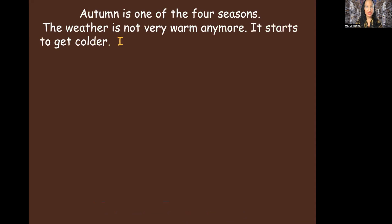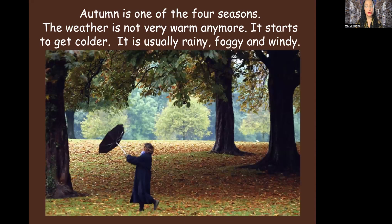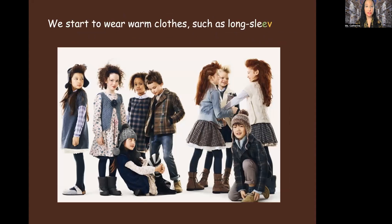Autumn is one of the four seasons. The weather is not very warm anymore — it starts to get colder. It is usually rainy, foggy, and windy. You'll notice during the day it's a lot warmer, but the morning and the evening start to get a lot colder. School starts, right, everyone? Who has children? We start to wear warm clothes such as long-sleeved shirts, pants, and sweaters.